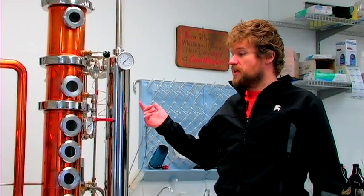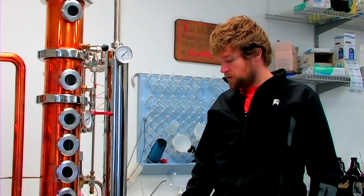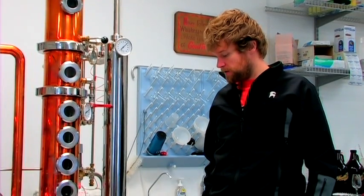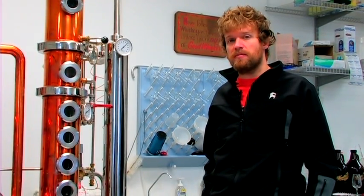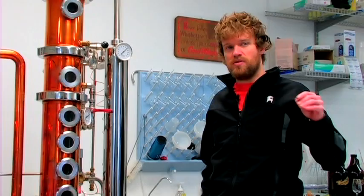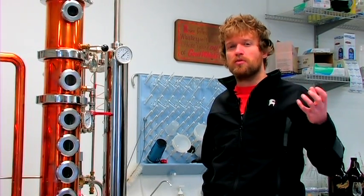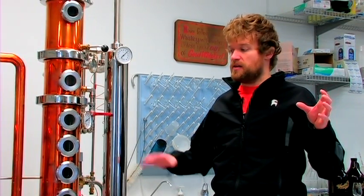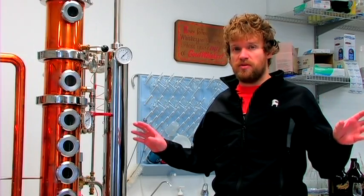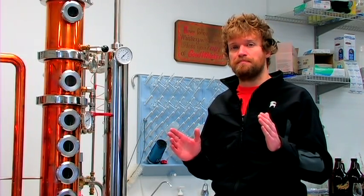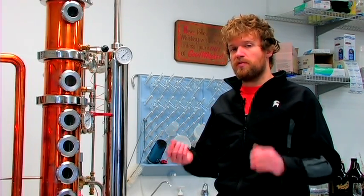So once the spirit comes over into the condenser, it comes out as a white clear spirit, as it is right here. You'll take the middle cut of the spirit. The first cut is a little bit too pungent. There's some flavors and aromas that you don't really want in the middle cut. You take the end cut, you get rid of both of those, and then you have this middle spirit cut with all the proper flavors and aromas that you want.